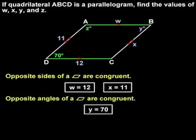And if two parallel lines are cut by a transversal, then same side interior angles are supplementary, so we can set up the equation 70 plus z equals 180,